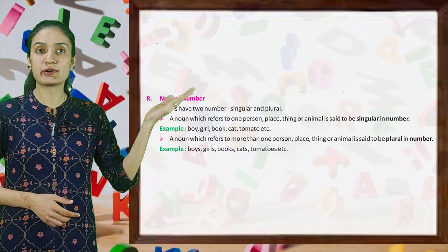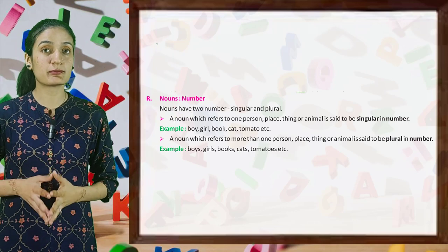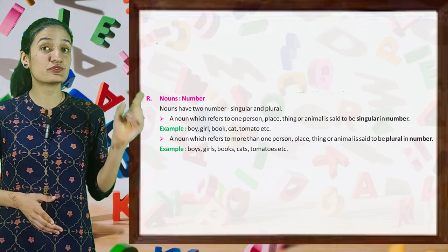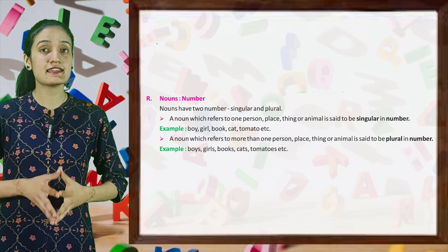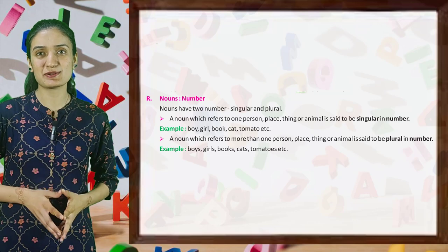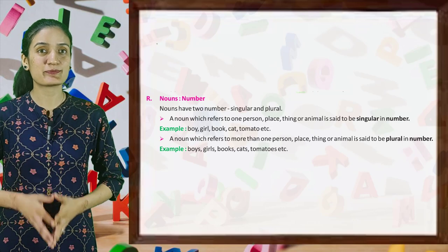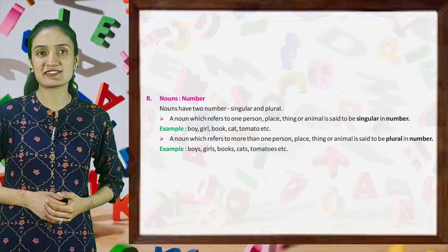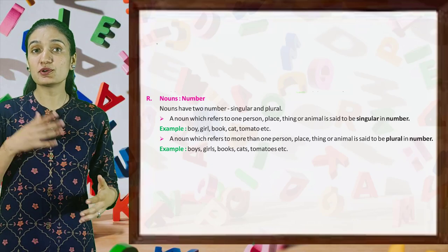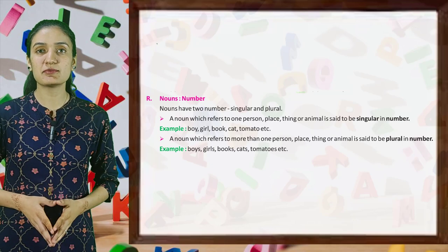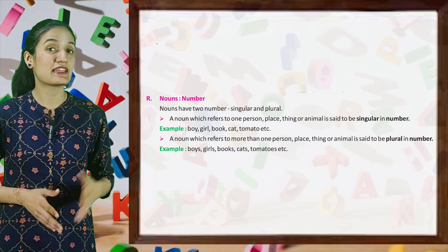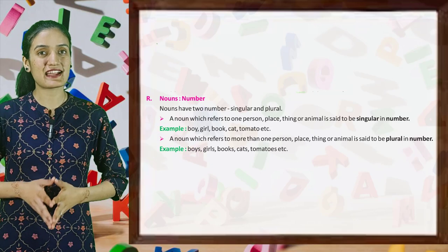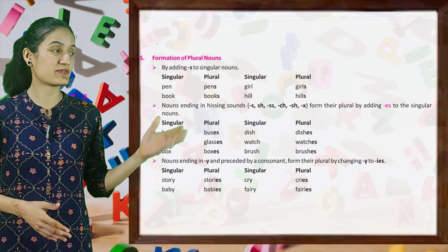Nouns — number. Nouns have two numbers: singular and plural. A noun which refers to one person, place, thing or animal is said to be singular in number. Examples: boy, girl, book, cat, tomato, etc. A noun which refers to more than one person, place, thing or animal is said to be plural. Examples: boys, girls, books, cats, tomatoes, etc.